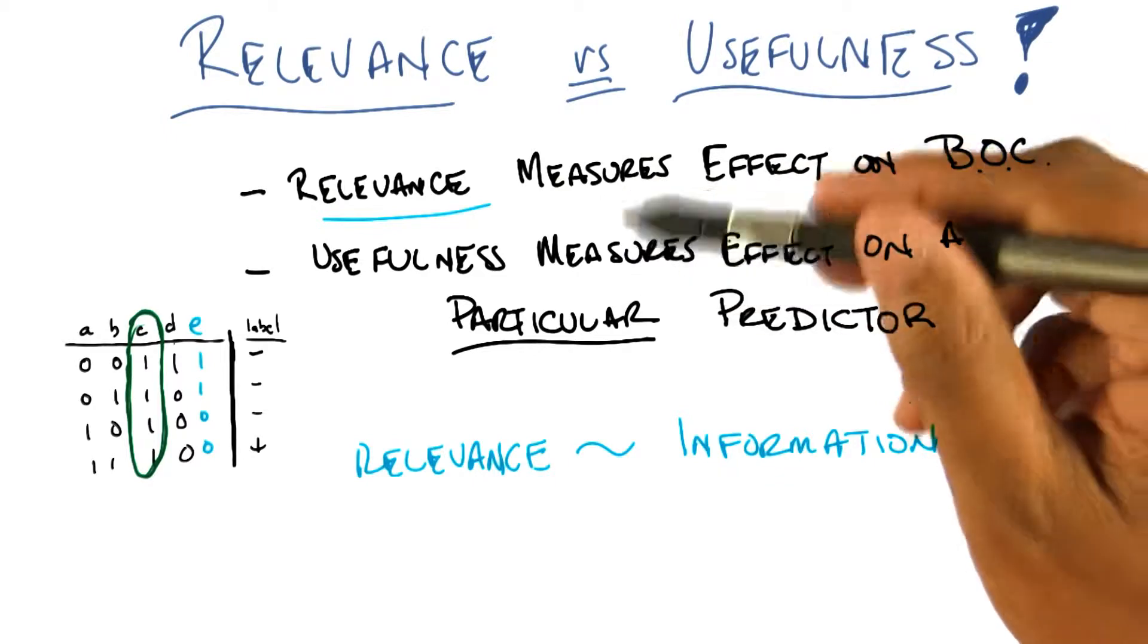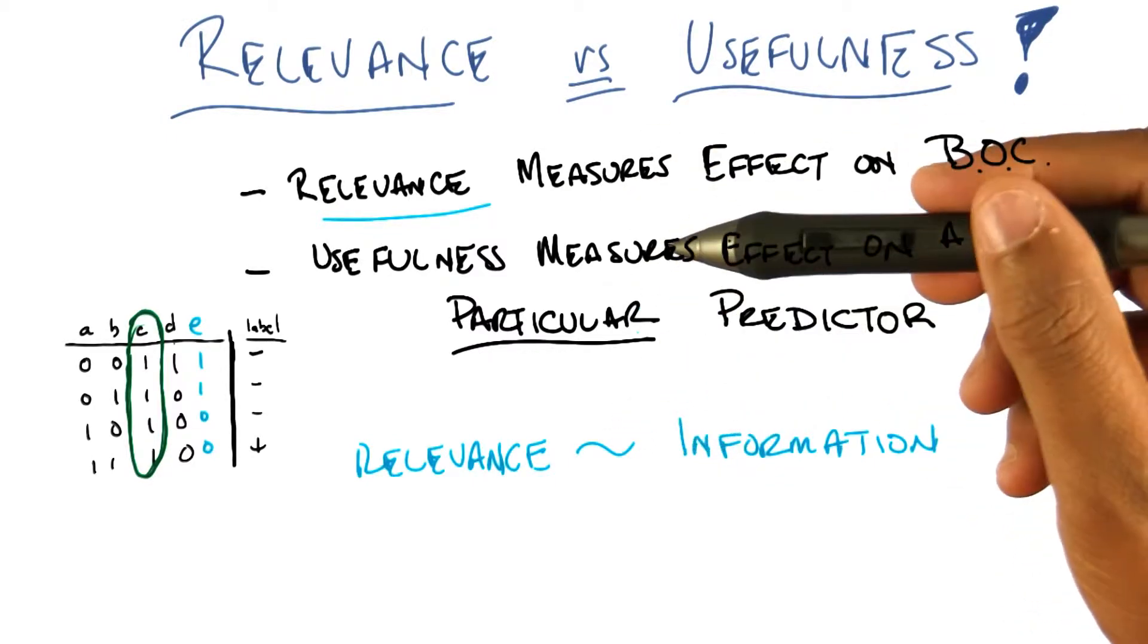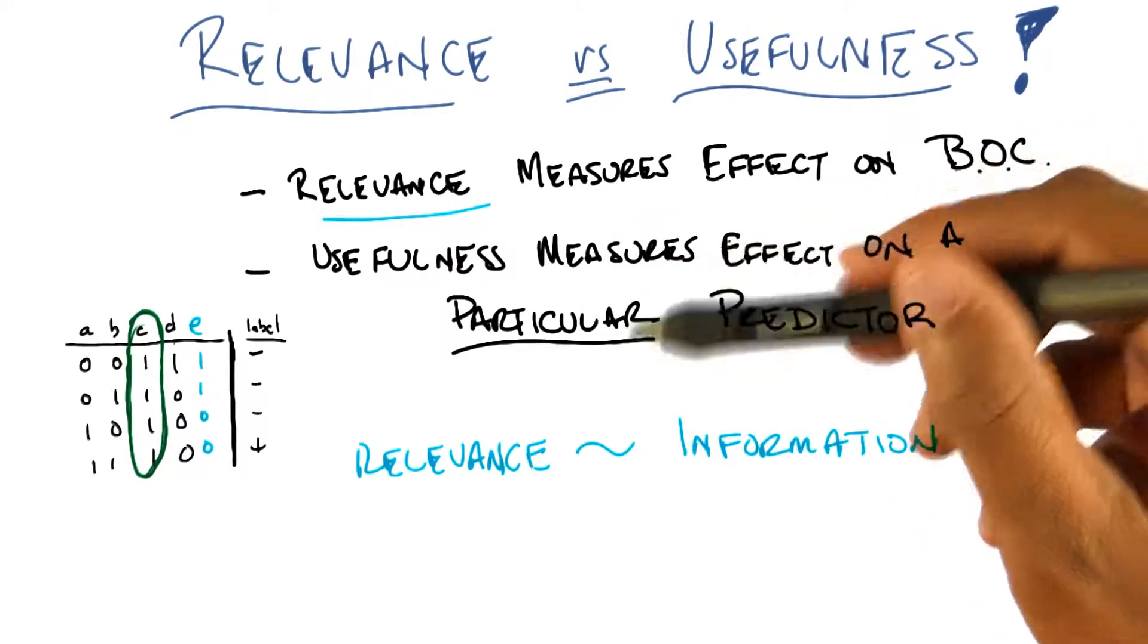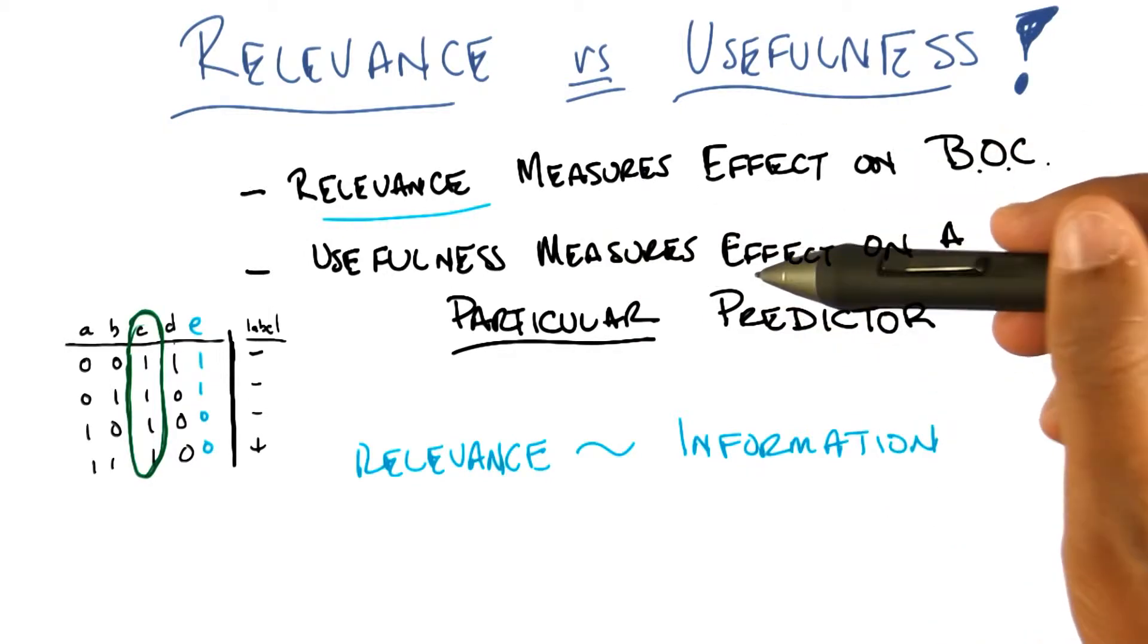So when you were talking earlier about things that you might use for filtering, you said, well, I like things that have variance, or things that have entropy, or things that give me information gain. Those are all measures of the information that is present in a particular variable or a particular feature.